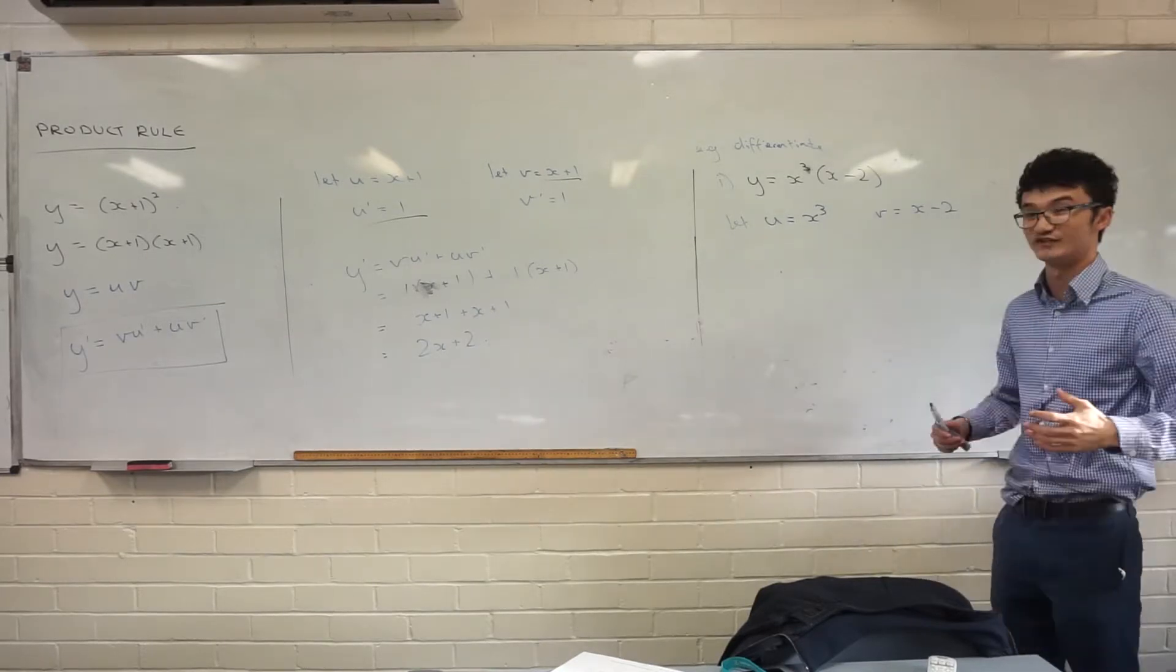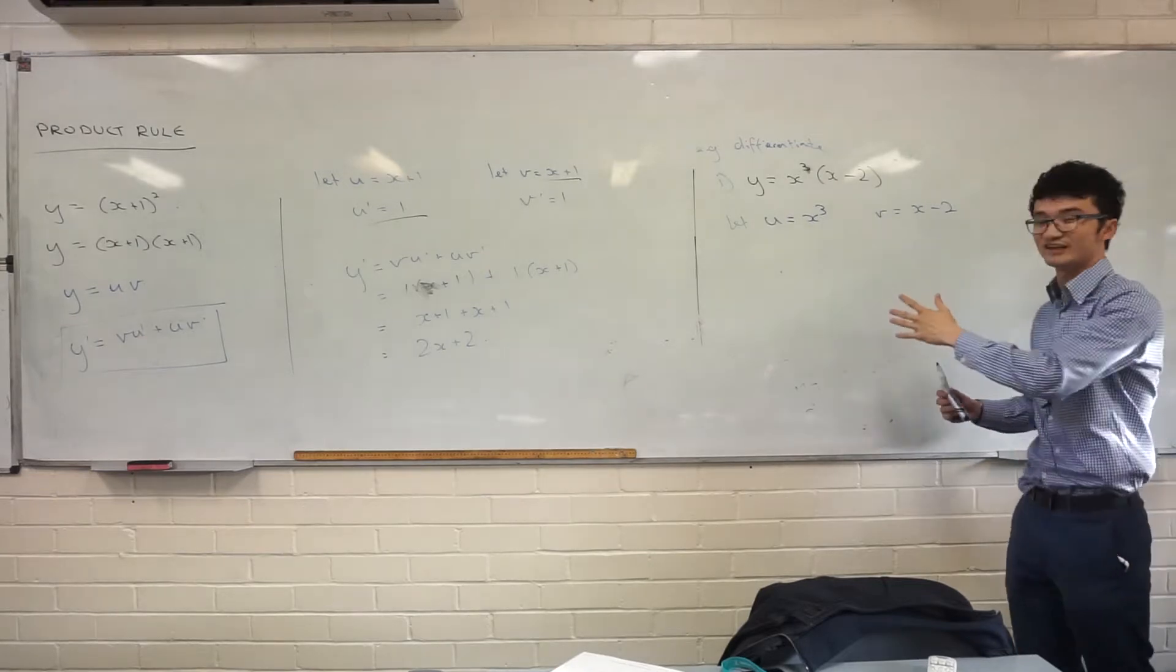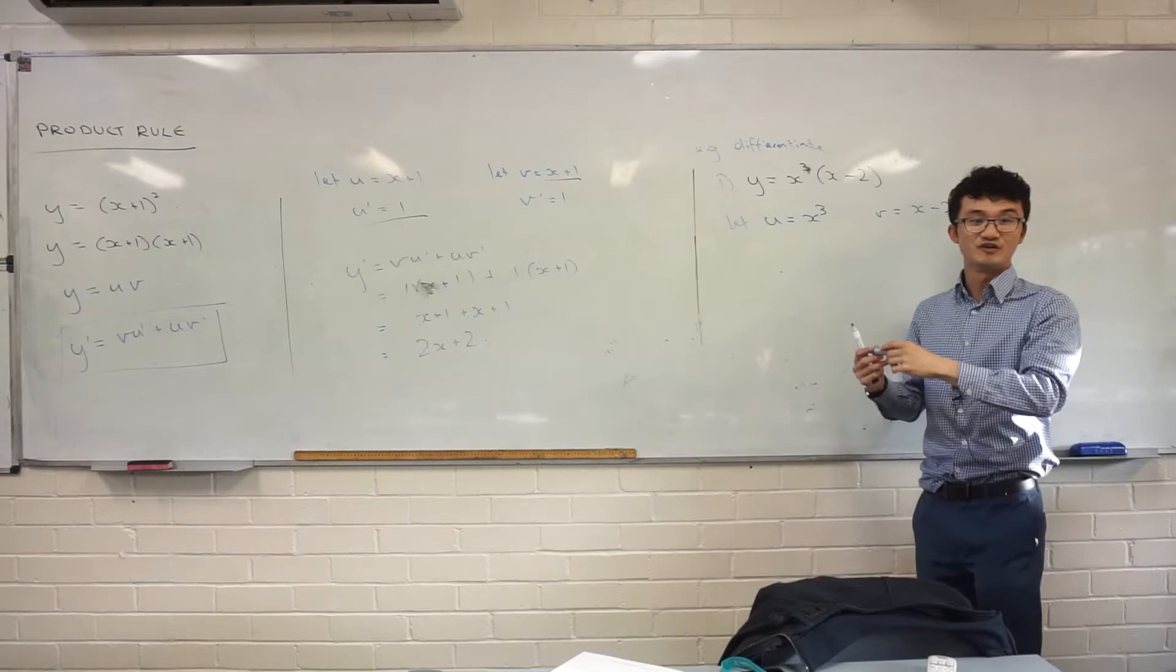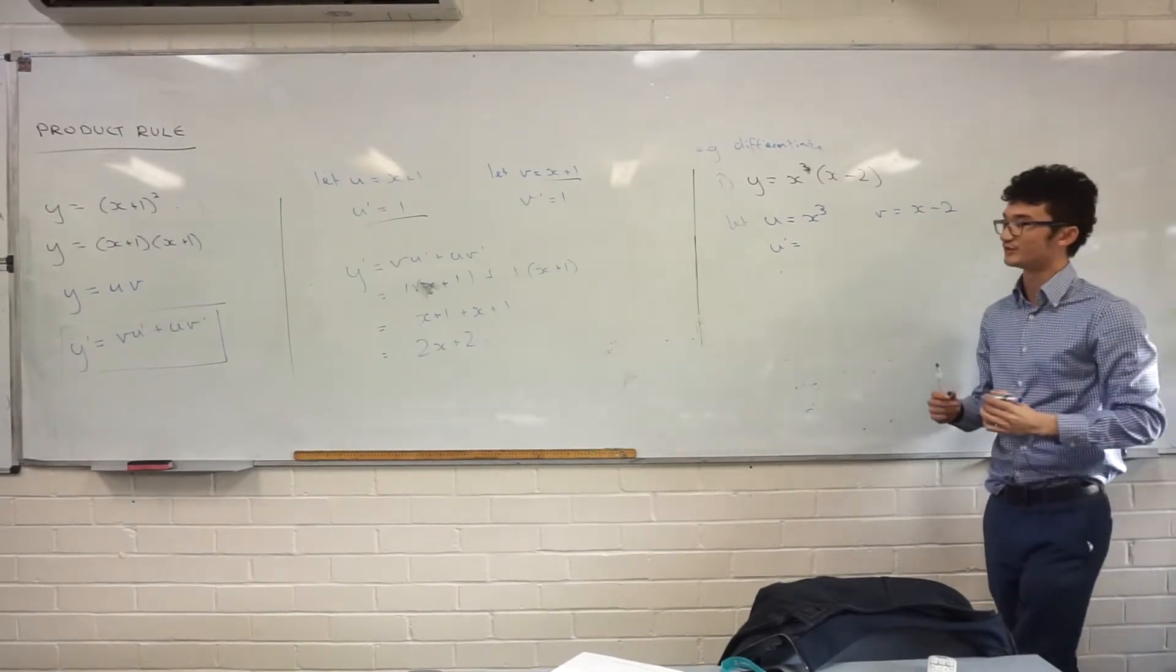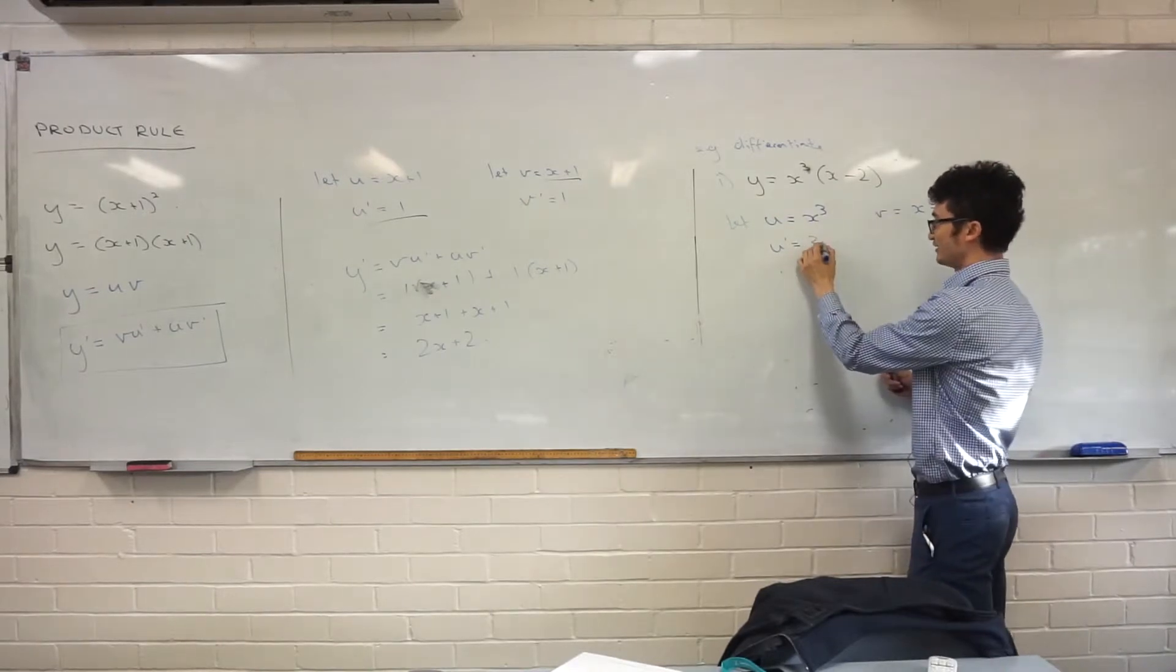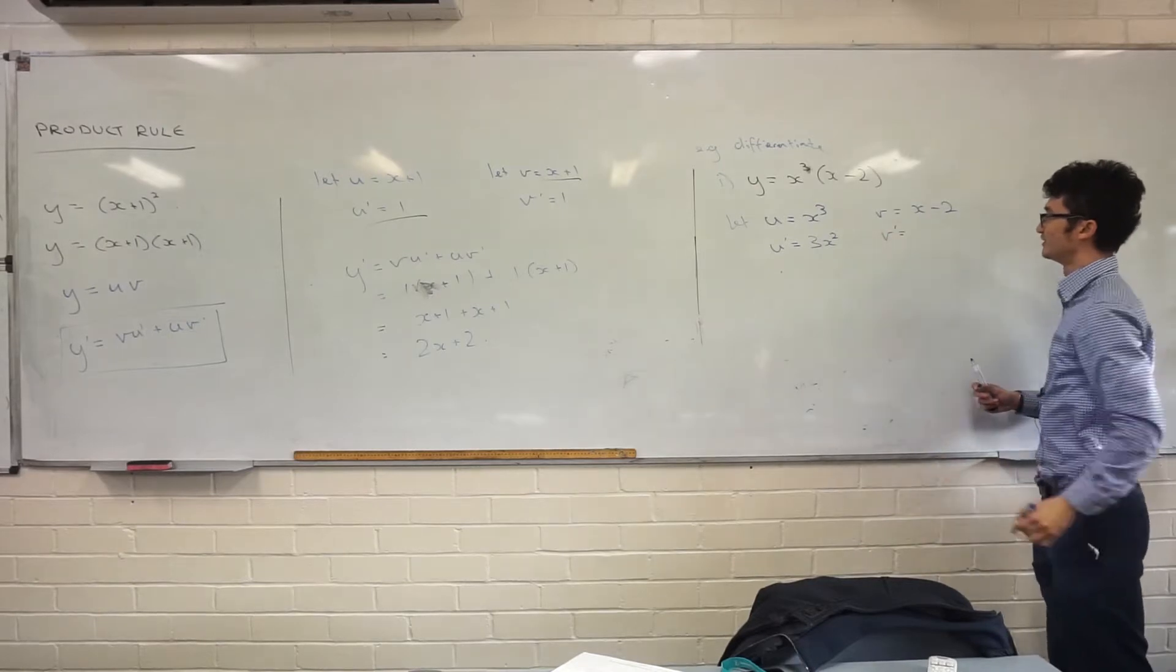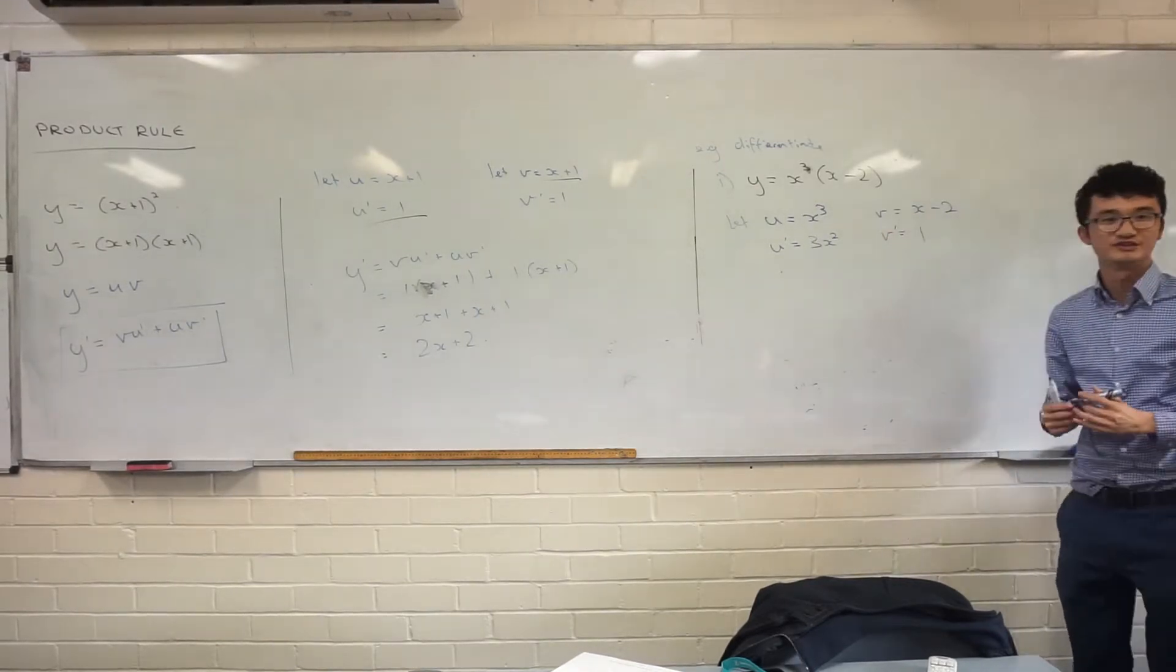So just to avoid any confusion there. I still want you, just the first couple of times we're doing this, just to write it out like I'm doing here. We've got u and we've got v. We're taking the derivatives of those parts respectively. So u dash, what would that be if I take u dash for this one? 3x squared, awesome. And then v dash, alright, taking the derivative of this, we know that. That's just going to be 1. That constant goes away.